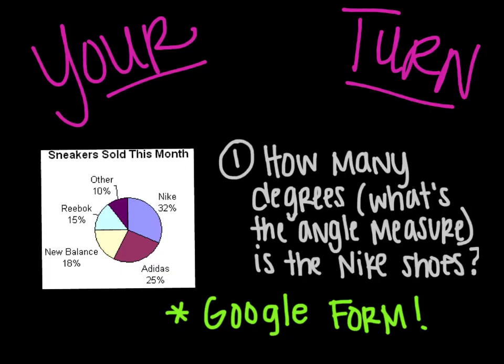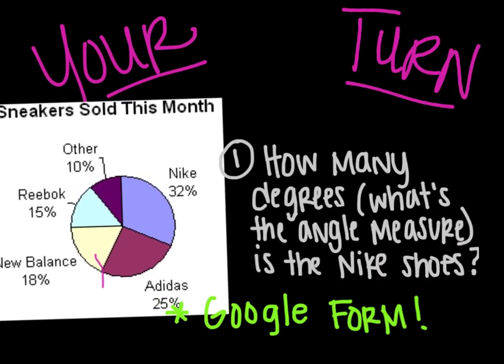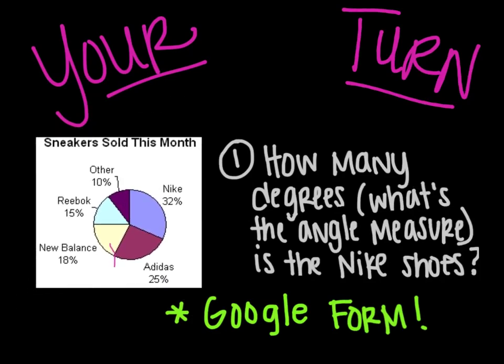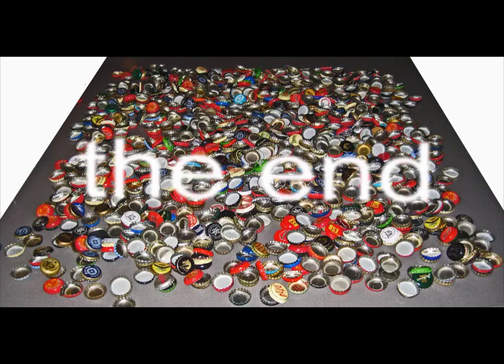Here's your turn. How many degrees? In other words, what's the angle measure of the Nike shoes? So the Nike shoes, as you can see right here, are the 32% in that kind of purpley color. And then please put your answer on the Google form. There will also be a couple additional questions. This is the end of the video. Thank you for watching. Have a great day. Don't forget to submit on Google Forms.